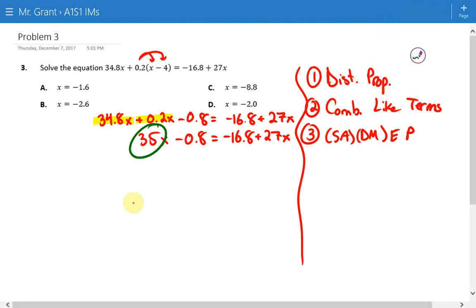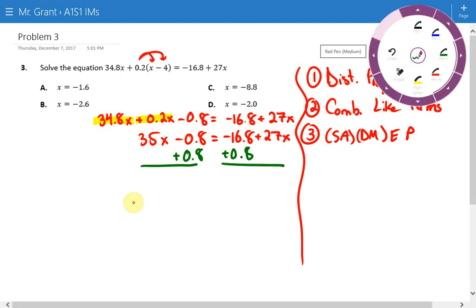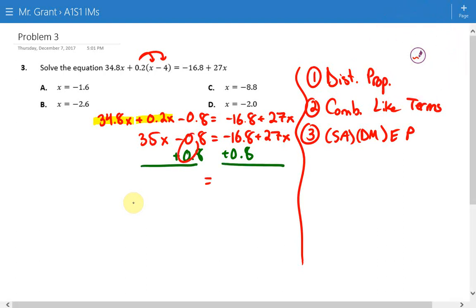There are four different terms here and we can add or subtract any of them. However, I'm going to deal with the decimals first because that will make life easier. I'll undo the subtracting 0.8 by adding 0.8 to both sides. Be careful here and maybe check with your calculator. -16.8 + 0.8 brings us to -16 + 27x.